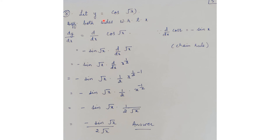Question 8: let y = cos(√x). Differentiating both sides with respect to x, dy/dx = d/dx[cos(√x)]. Since d/dx(cos x) = −sin x, and here x is replaced by √x, we get −sin(√x) · d/dx(√x) by chain rule. Now d/dx(√x) = d/dx(x^(1/2)) = (1/2)x^(−1/2) = 1/(2√x). So the answer is −sin(√x) / (2√x).